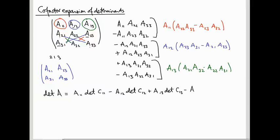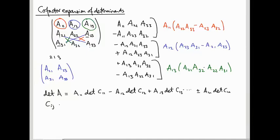The final term will be plus or minus A1N·det(C1N), where the sign depends on whether N is odd or even. So what is Cij? It is the (N−1)×(N−1) submatrix obtained by removing row I and column J.